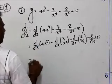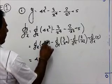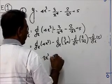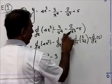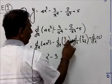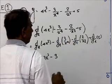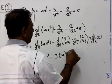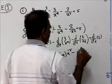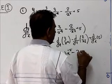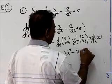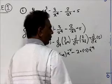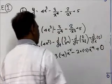For the first term, take 4 out: 4 · d/dx of x³ = 4 · 3x² = 12x². For the second term, 3/x⁴ = 3x⁻⁴, so its derivative is 3 · (−4)x⁻⁵. For the third term, 2/x³ = 2x⁻³, giving 2 · (−3)x⁻⁴.